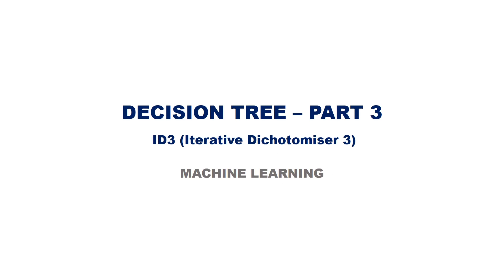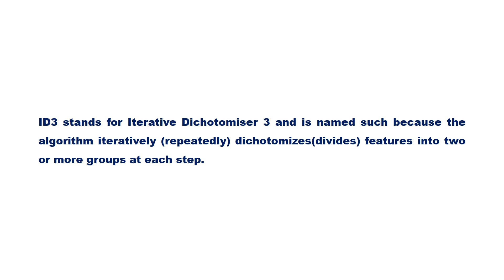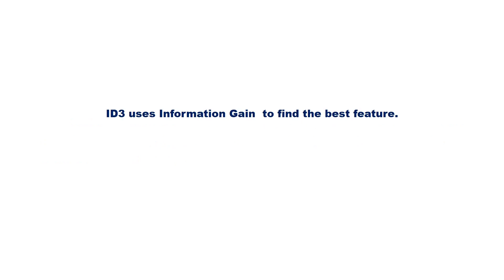In this video, let us discuss the ID3 algorithm to generate a decision tree. ID3 stands for Iterative Dichotomizer 3 and is named such because the algorithm iteratively dichotomizes features into two or more groups at each step.